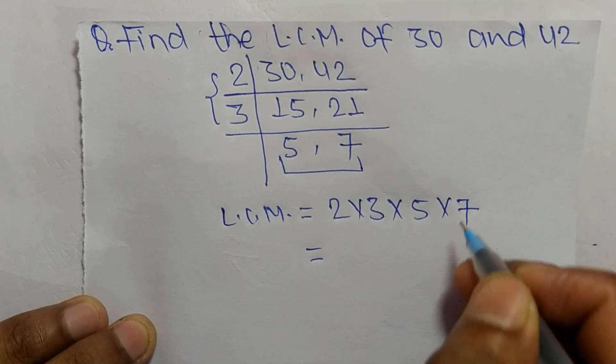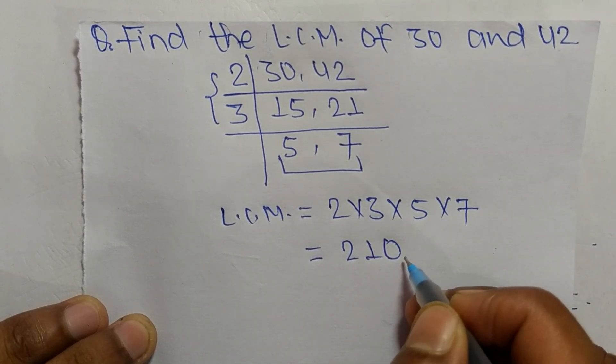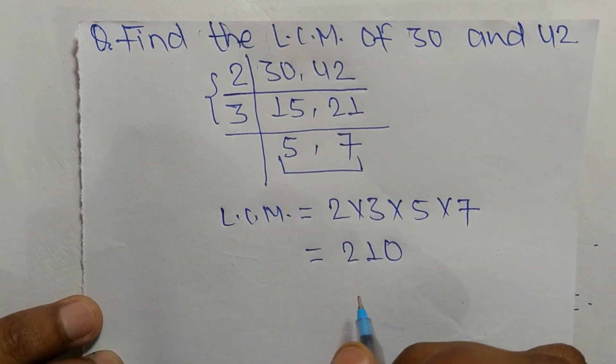30 times 7 means 210, so 210 is the LCM of 30 and 42. That's all for today, thanks for watching.